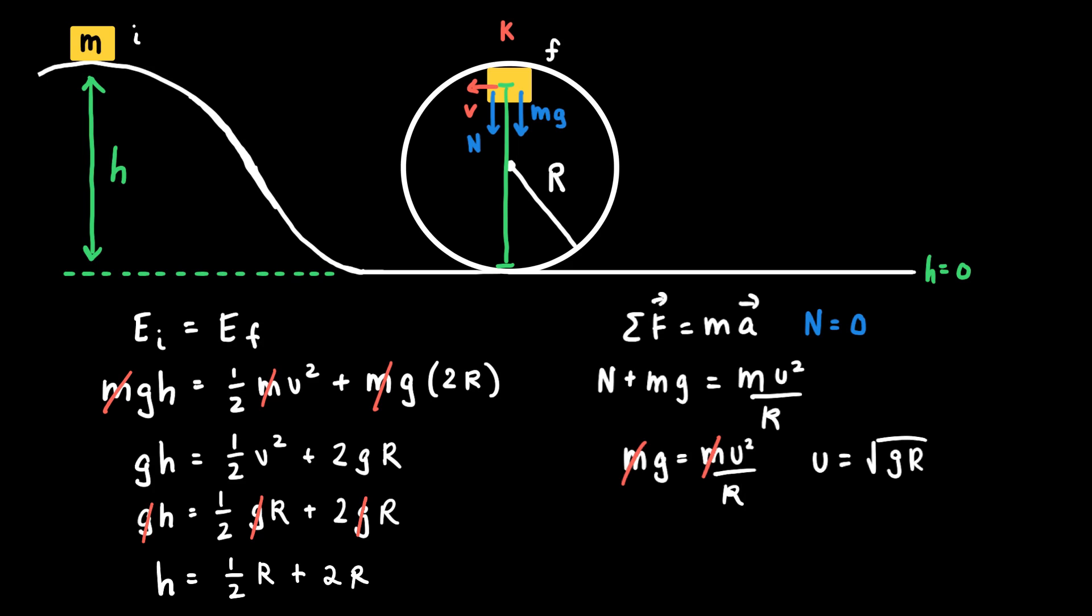And so perhaps now you can see why we've taken the effort to write this conservation of mechanical energy equation and the Newton's second law of motion equation, because we get to this point where we have an expression that relates the radius of the loop to the height that the cart has initially.